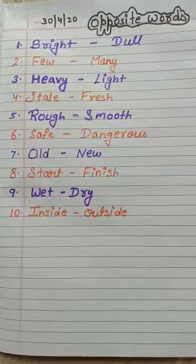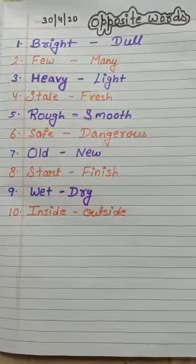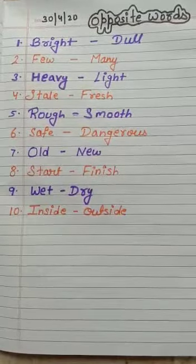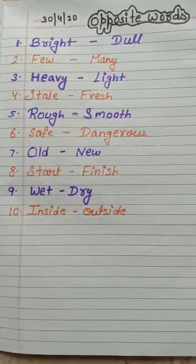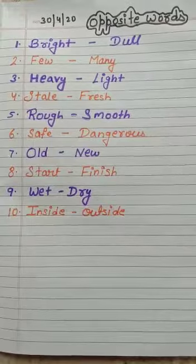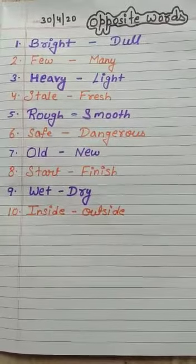Second one is few, many. F-E-W, few. Few means kam. M-A-N-Y. Many means adhik.